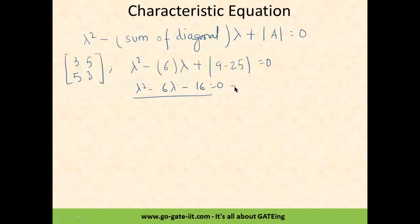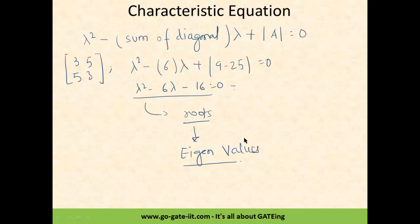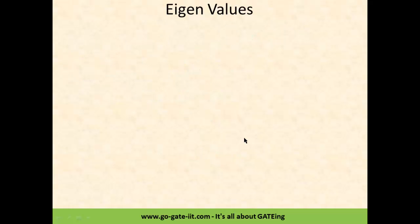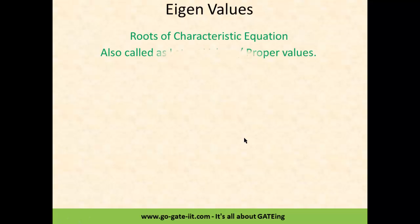Since this is a quadratic equation, it will give some roots, and these roots are called eigenvalues. Some people call them eigen values. Eigenvalues are the roots of the characteristic equation. They are also called latent values or proper values. In examinations, questions are sometimes tweaked and ask for the latent values of a matrix — don't get confused, because latent values are nothing but eigenvalues.